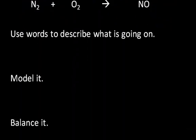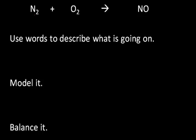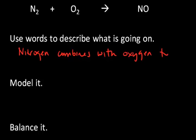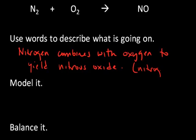Let's look at one more example. Nitrogen, in this case we see nitrogen plus oxygen yields nitrogen monoxide or nitrous oxide. Use words to describe what's going on. What I would say is that nitrogen combines with oxygen to yield nitrous oxide. That's the common name for NO. You could also call it nitrogen monoxide if you're not familiar with the common name.